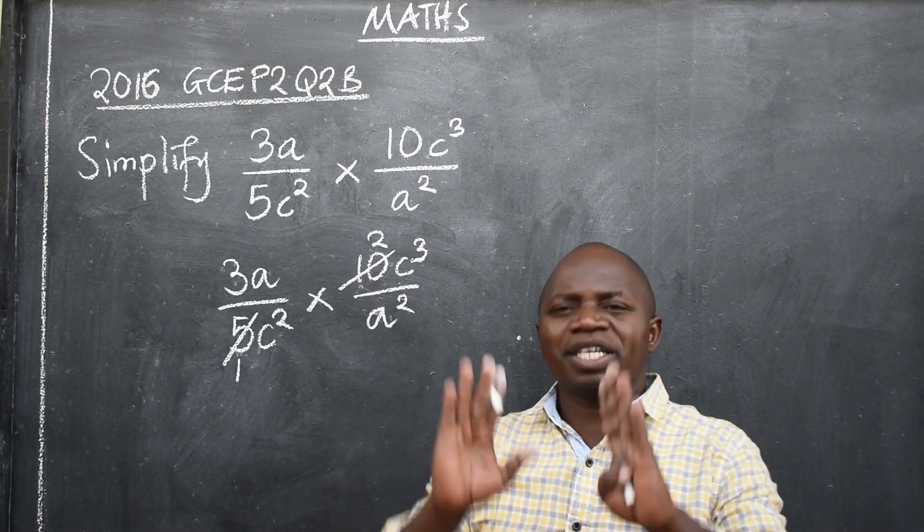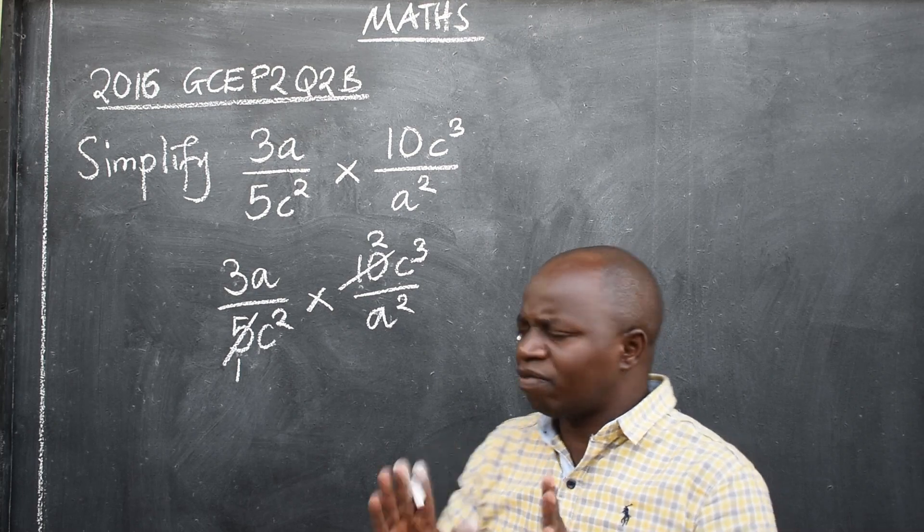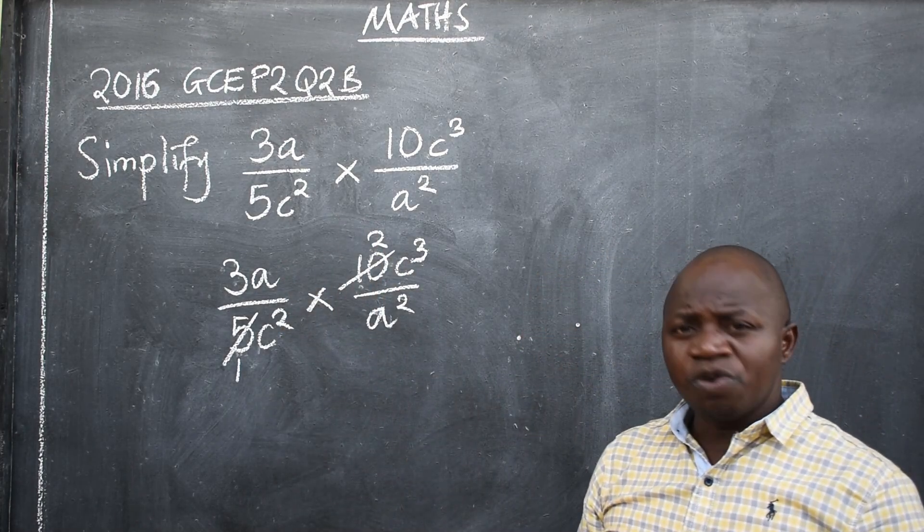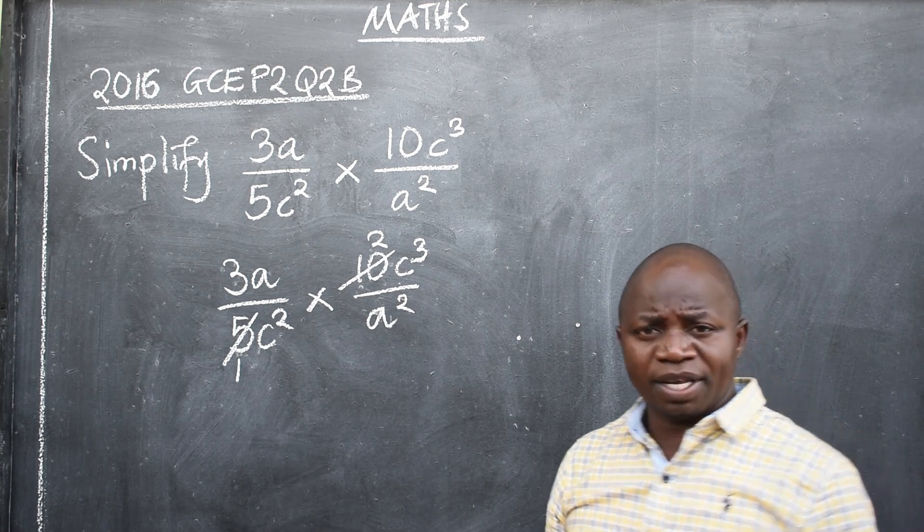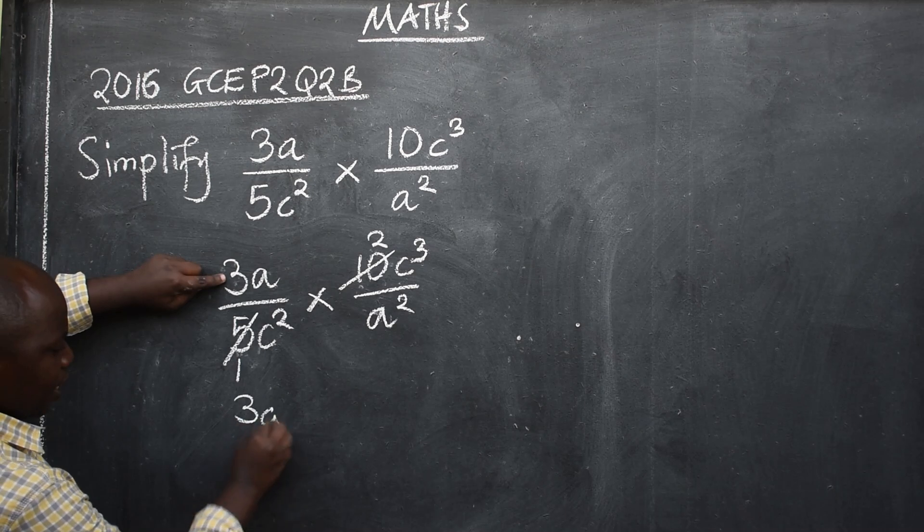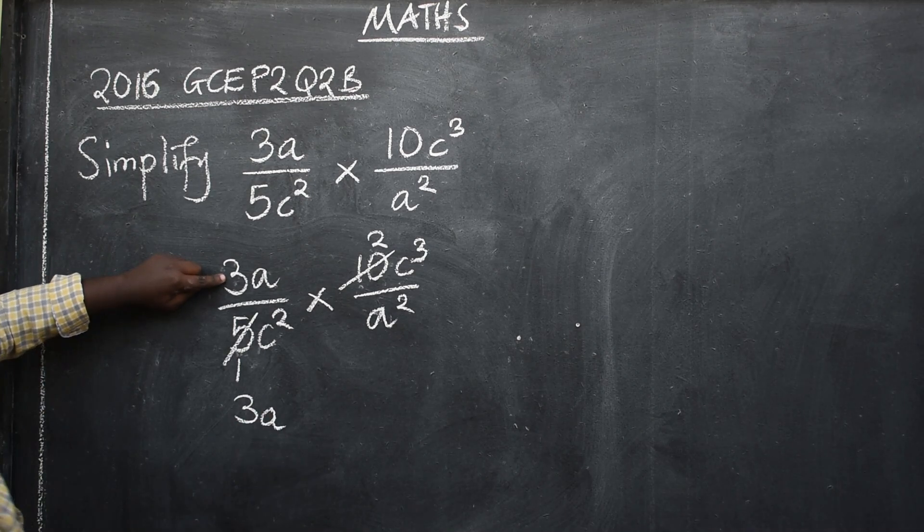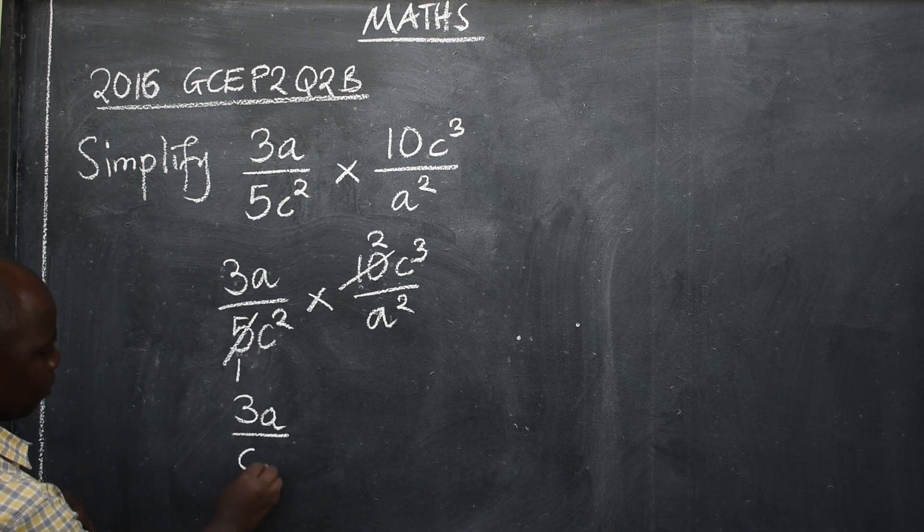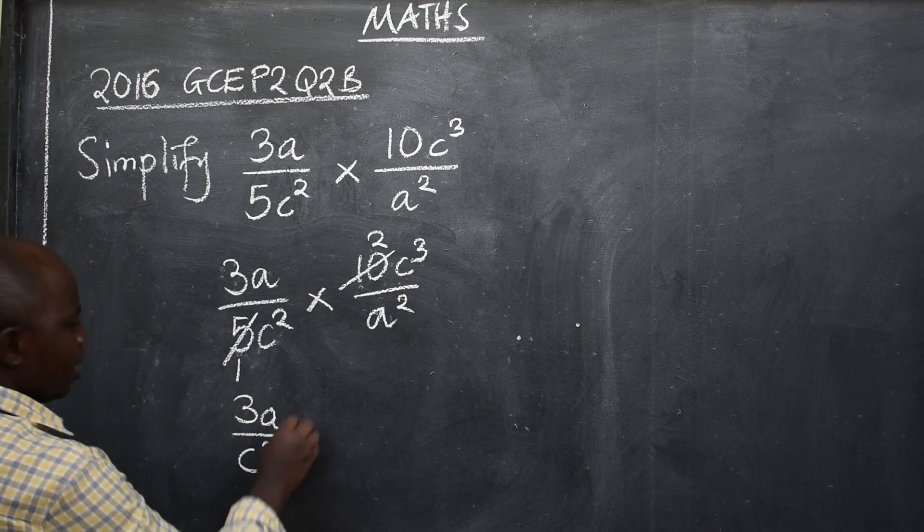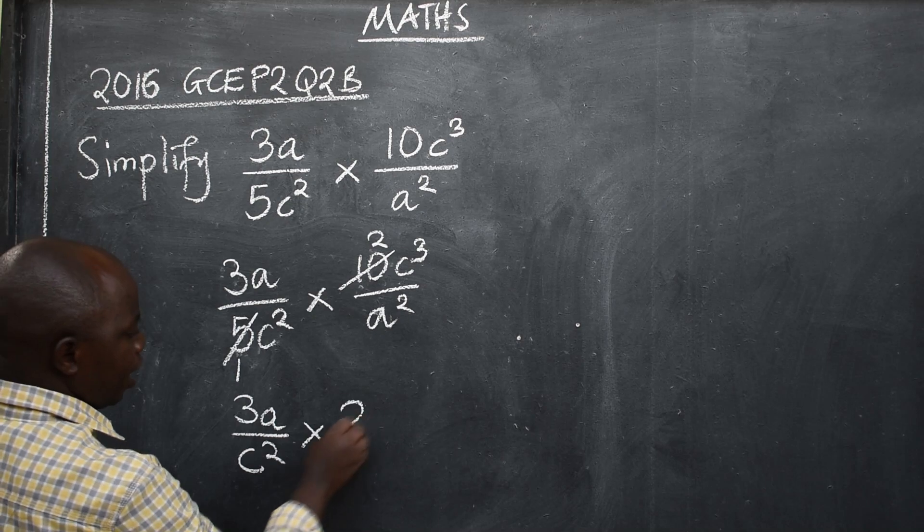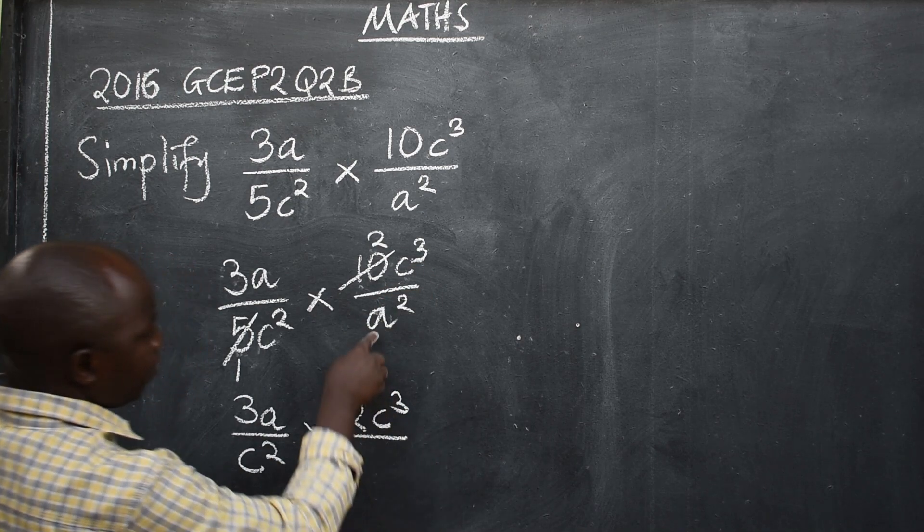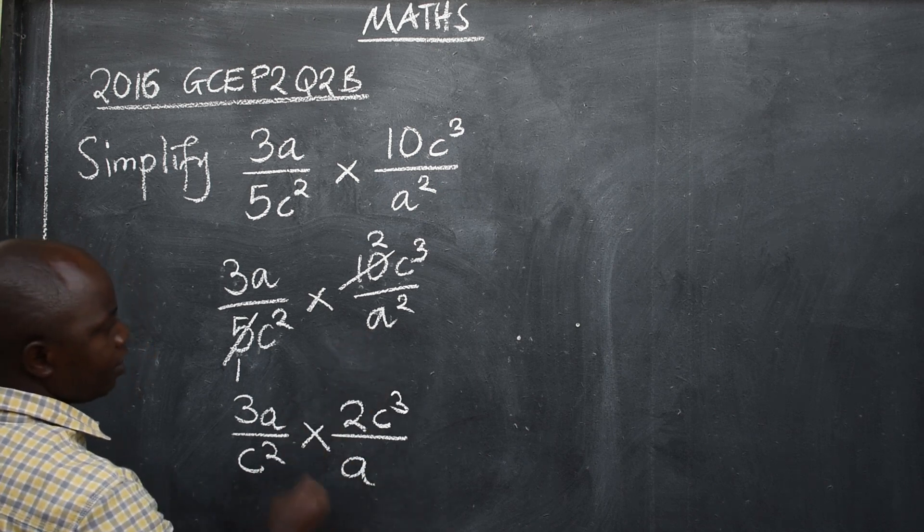After that, you are going to copy what has remained. Don't do everything at once. You'll get confused and you'll be able to make mistakes in that way. So we are going to have 3a here, which is 3a, like this. We also have divided by c to the power 2. That is what has remained. The 5 has gone. 1 times, we have 2 here. We have c to the power 3, like this. Over, what has remained here, a squared.